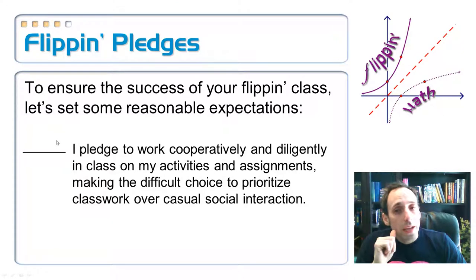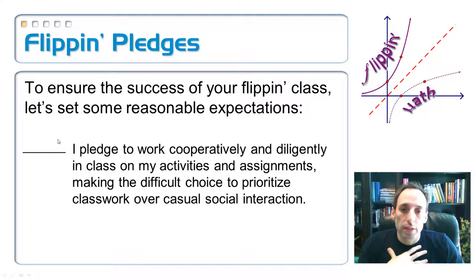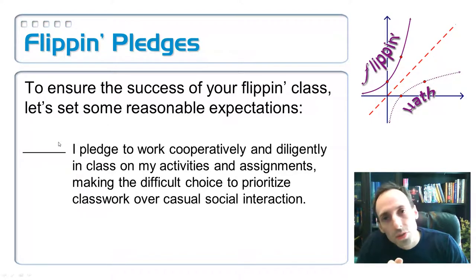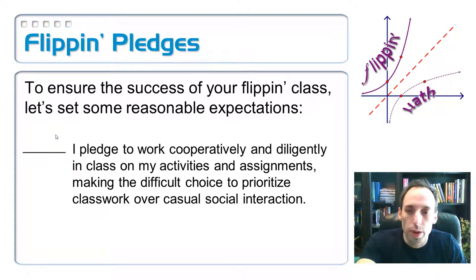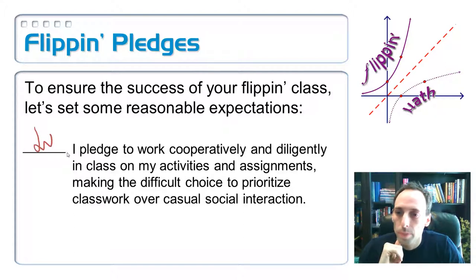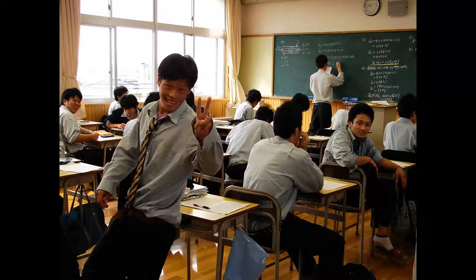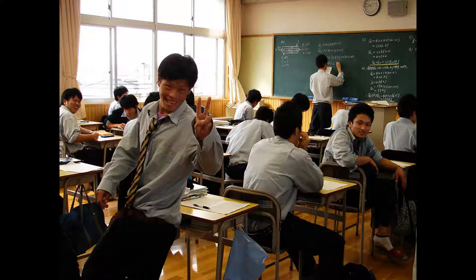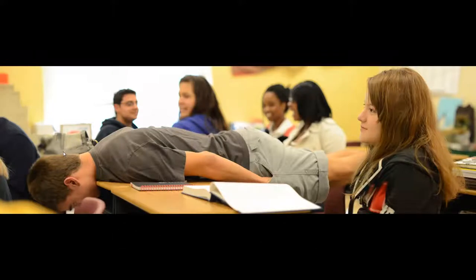I pledge to work cooperatively and diligently in class on my activities and my assignments, making the difficult choice to prioritize classwork over casual social interaction. Boy, that's a tough one, but I'll go ahead and agree with that one. Let's go ahead and initial. Because we don't want to be like this class right here. You know some cute girl just walked by and everybody has got to try to impress her or something like that. Or, what's going on in this class? This is not the class that we want. We want to be sure having a bit of fun, but we also want to be getting our work done.